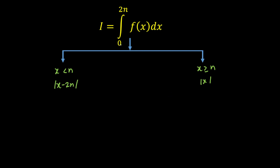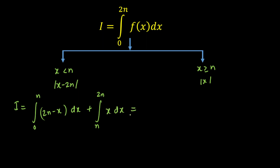Now I am going to integrate this function. I know in which interval to break. So I will be equal to the integration from 0 to n — I am going to write this as 2n minus x, because mod of x minus 2n opens as 2n minus x since x is varying from 0 to n and 2n is greater. The next integration will be from n to 2n, where I write mod of x as simply x. Now I can easily integrate this. Integrating gives 2nx minus x squared over 2 with limits 0 to n, and x squared over 2 with limits n to 2n.